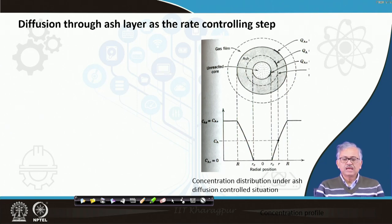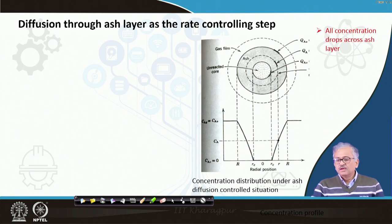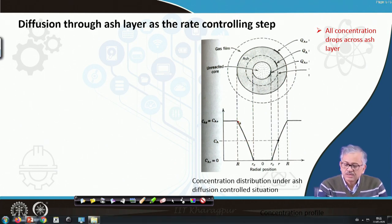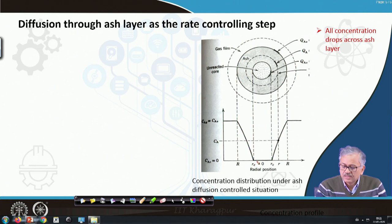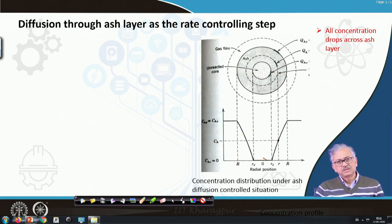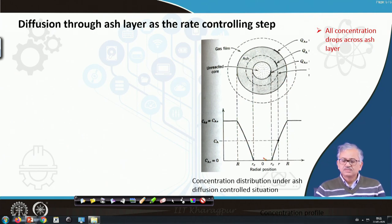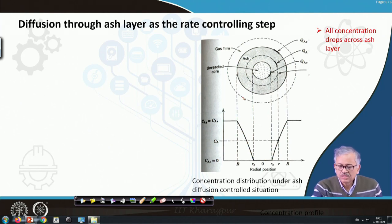Let us consider diffusion through the ash layer as the rate controlling step. In this case, the concentration of the reactant only falls across the ash layer. In the film, there is no concentration gradient. At the reaction interface, the concentration of A equals the equilibrium concentration, meaning the reaction is very fast and equilibrium is attained immediately. So concentration at the interface C_Ac equals C_Ae. Similarly, concentration across the film is constant: C_As equals C_Ag, the bulk gas concentration. Only the major concentration drop occurs across the ash layer.